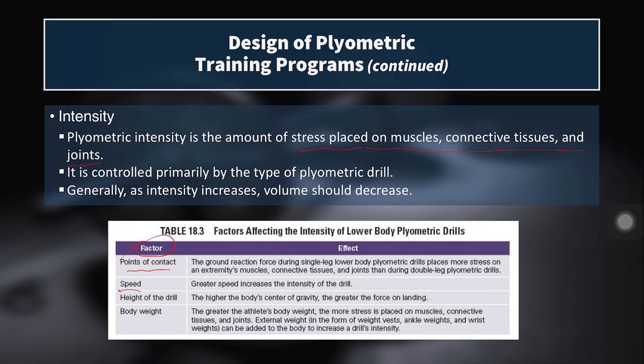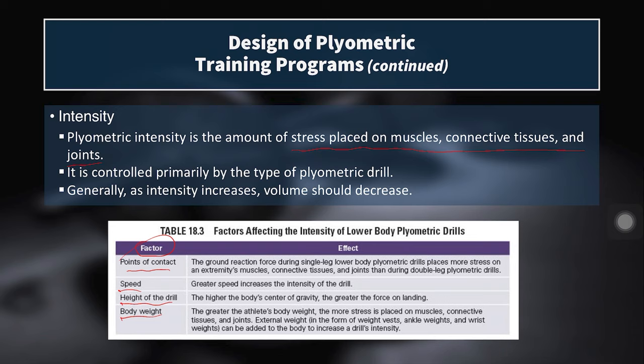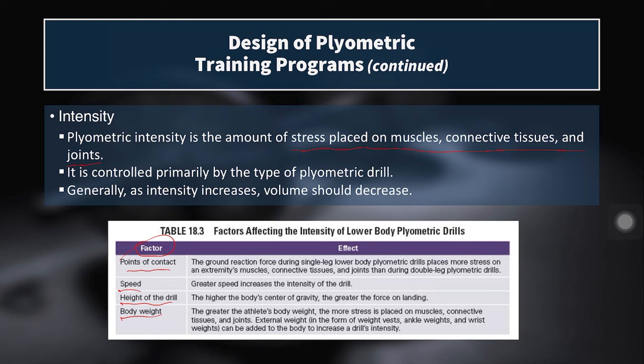Second, the speed of the drill — the faster you're moving into a bounding drill, the higher the stress due to greater velocity. Third, the height of the drill — jumping over low hurdles is far less intense than jumping over waist-high hurdles, since gravity has longer to accelerate your body back to earth. Fourth, body weight — the higher the body mass, the higher the intensity of any plyometric exercise. A 350-pound lineman doing repeated depth jumps carries a much higher risk than a 160-pound sprinter, so we have to weigh the reward against that risk and potentially scale back accordingly.